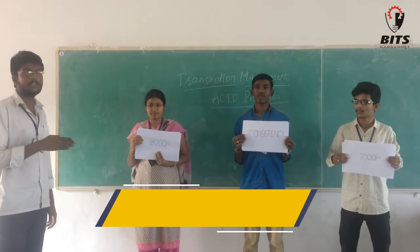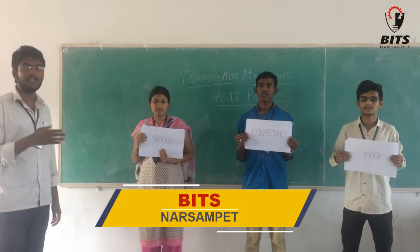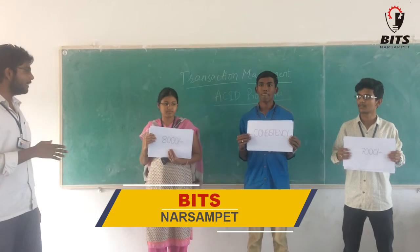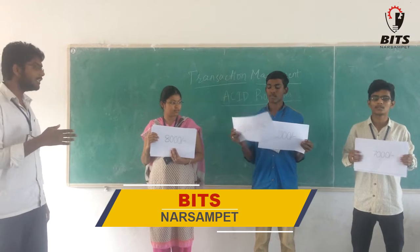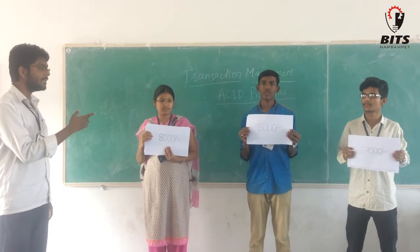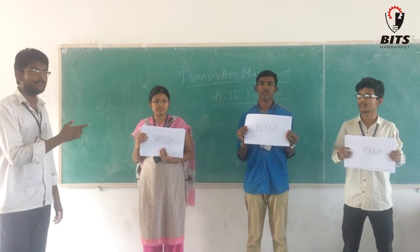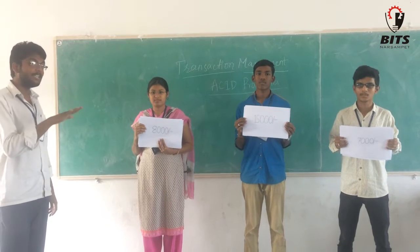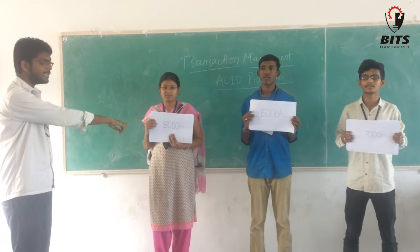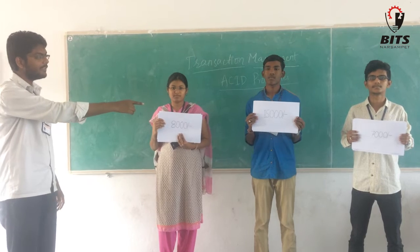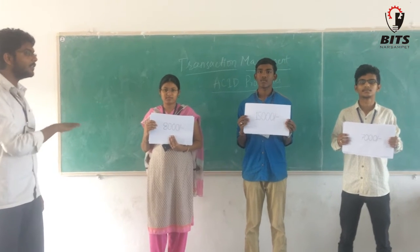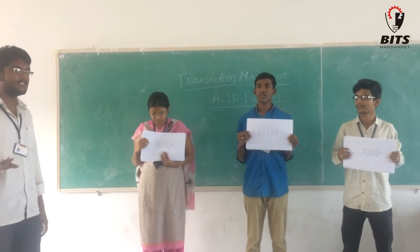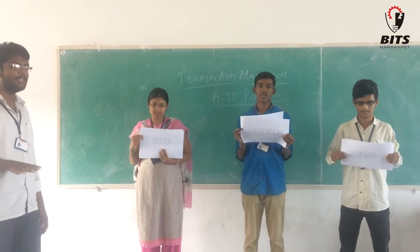Coming to the second property — C is Consistency. The total amount before and after the transaction should be the same. Before the transaction, User A has 10,000 and User B has 5,000, so the total amount is 15,000. After the transaction, User A has 8,000 and User B has 7,000, and the total amount is still 15,000. So Consistency is also satisfied.